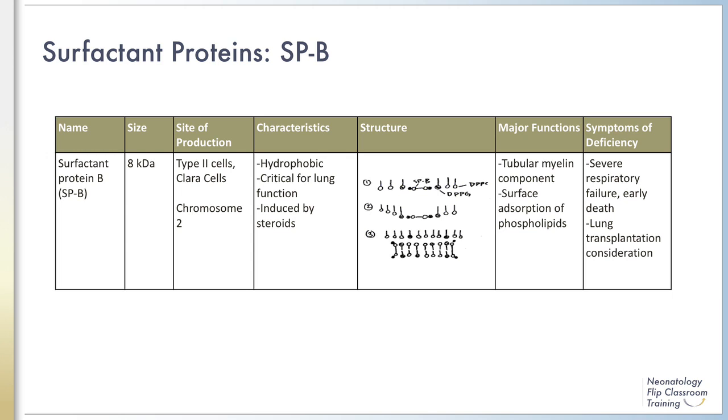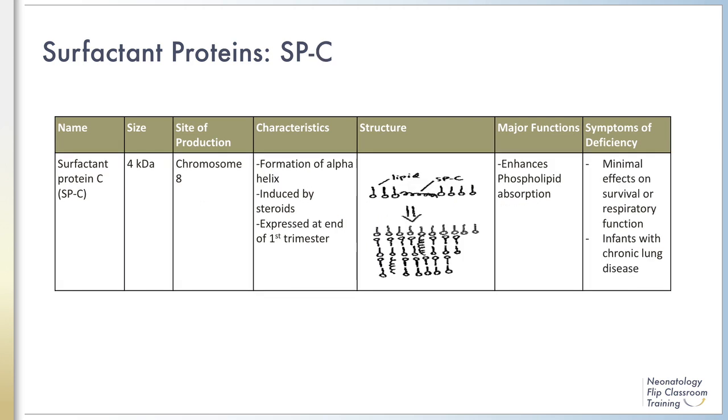Surfactant protein B is a major component of tubular myelin and it is essential — infants with surfactant protein B deficiency will often die early in life from severe respiratory failure.